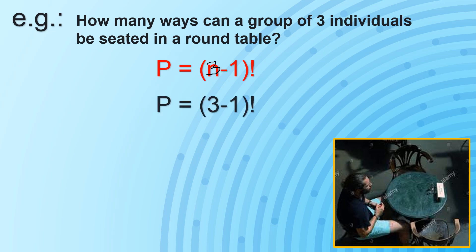Making our equation: P equals (3 minus 1) factorial. Simplifying the terms inside: 3 minus 1 equals 2, giving us 2 factorial. 2 factorial in expanded form means 2 times 1, and 2 times 1 equals 2. So it is true that there are just only 2 unique arrangements for these 3 individuals seated at a round table.